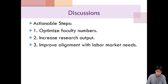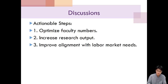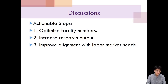Based on the analysis, here are some recommendations. First, universities should work on optimizing faculty numbers to ensure that they align with student enrollment. Second, institutions should focus on increasing their research output, as this is a key indicator of academic excellence and can contribute to higher efficiency scores. Finally, there needs to be a stronger emphasis on aligning academic programs with labor market needs to improve the employability of graduates and, consequently, the efficiency of universities.